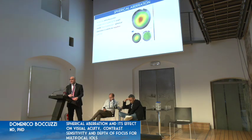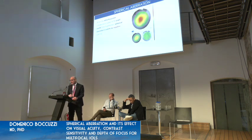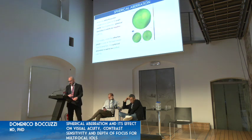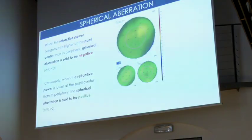When the refractive power, that is the divergence, is higher at the pupil center relative to the periphery, we have negative spherical aberration. Conversely, when the refractive power is lower at the pupil center, we have positive spherical aberration.